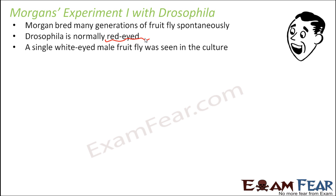But suddenly a single white-eyed male fruit fly was seen in the culture where most were red-eyed. This surprised him — how could a white-eyed fly be produced when there was no white-eyed fly in the parental generations? This raised a question in his mind and encouraged him to continue experimentation with Drosophila.